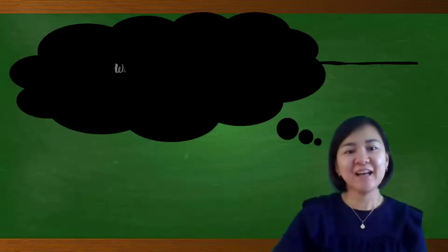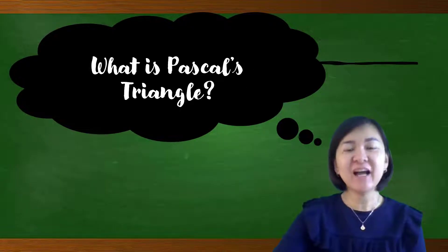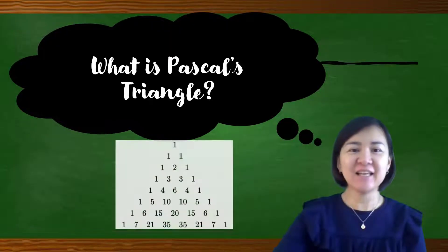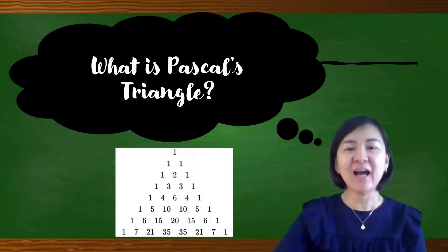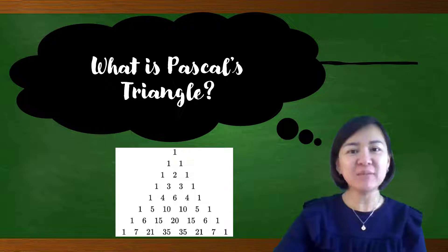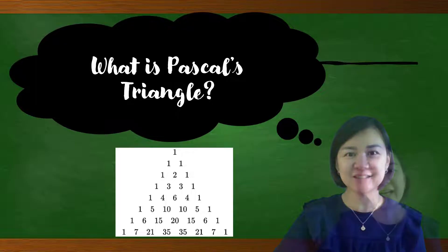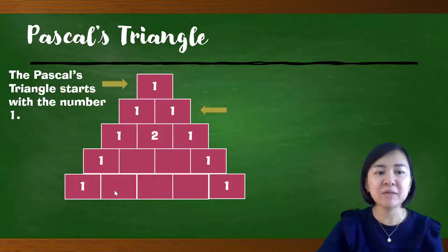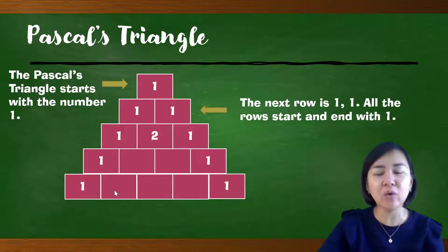Next, what is Pascal's Triangle? Have you heard about Pascal's Triangle before? Let me show you how to determine the numbers for each row. For Pascal's Triangle, the first row must start with the number 1. The second row is also 1, 1. All rows must start and end with 1.